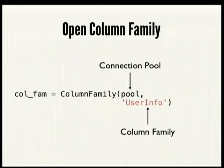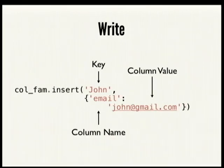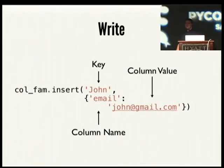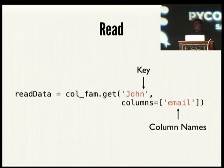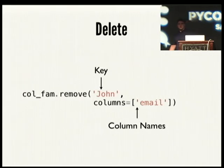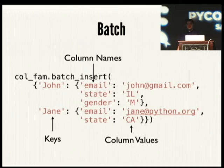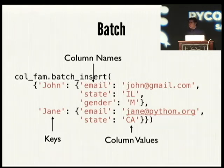Once you've created your connection pool, you create a column family object — tell it what connection pool to use and what column family to talk to. To write data you say insert, give it the key, and a dictionary of column name-to-value pairs. Read: you say get, give it a key, and optionally a list of columns. Delete: the same — give it a key and optionally a list of columns. The batch insert interface is probably what most people will want to use a lot — you give it a multi-level dictionary of key to another dictionary of columns and values, and it inserts all of that in a batch.